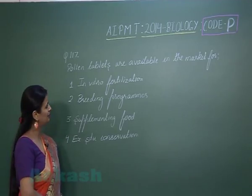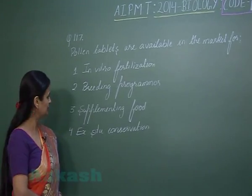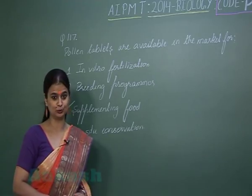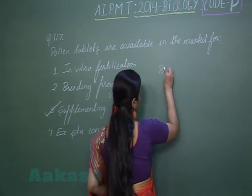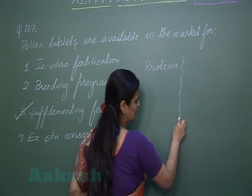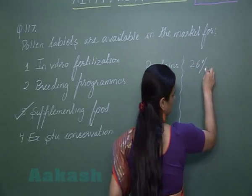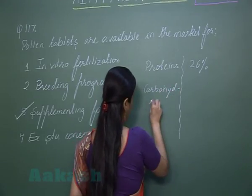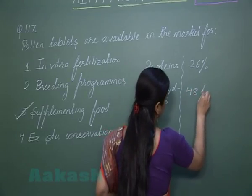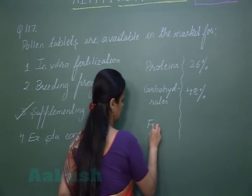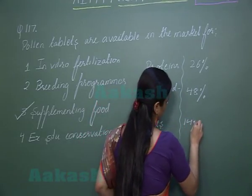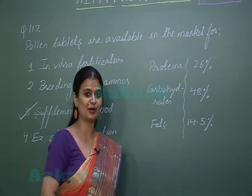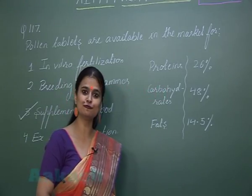Question 117: Pollen tablets are available in the market for supplementing food — this is the right option. Pollen grains are rich in nutrients: they contain proteins at around 26%, carbohydrates at maximally around 48%, and fats at 14.5%. So pollen grains are rich in proteins, carbohydrates, and fats.